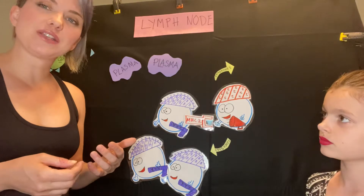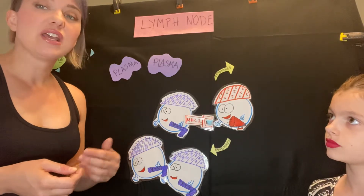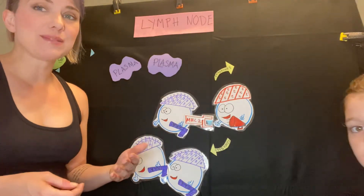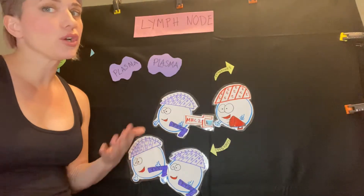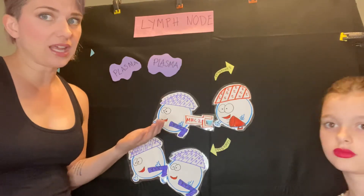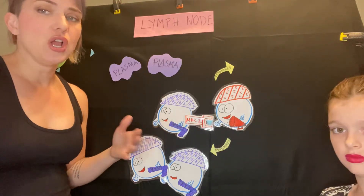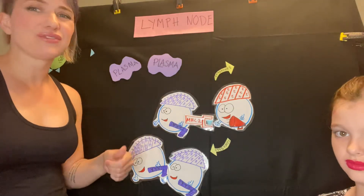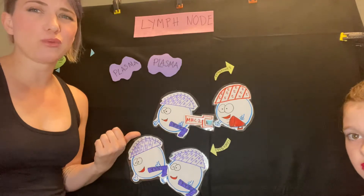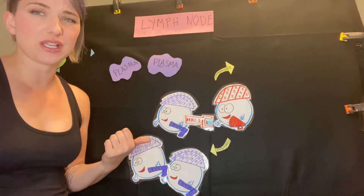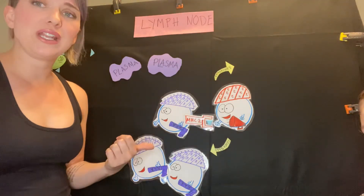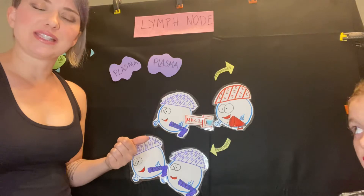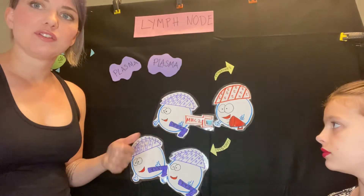The reason the plasma cells are short-lived is that we want the antibodies when we have the pathogen, but once the pathogen is cleared, we don't want the antibodies anymore. We don't want to be making thousands and thousands of antibodies for something we were sick with a couple months ago. We only need the antibodies when we need them, so that's why the plasma cells are short-lived.